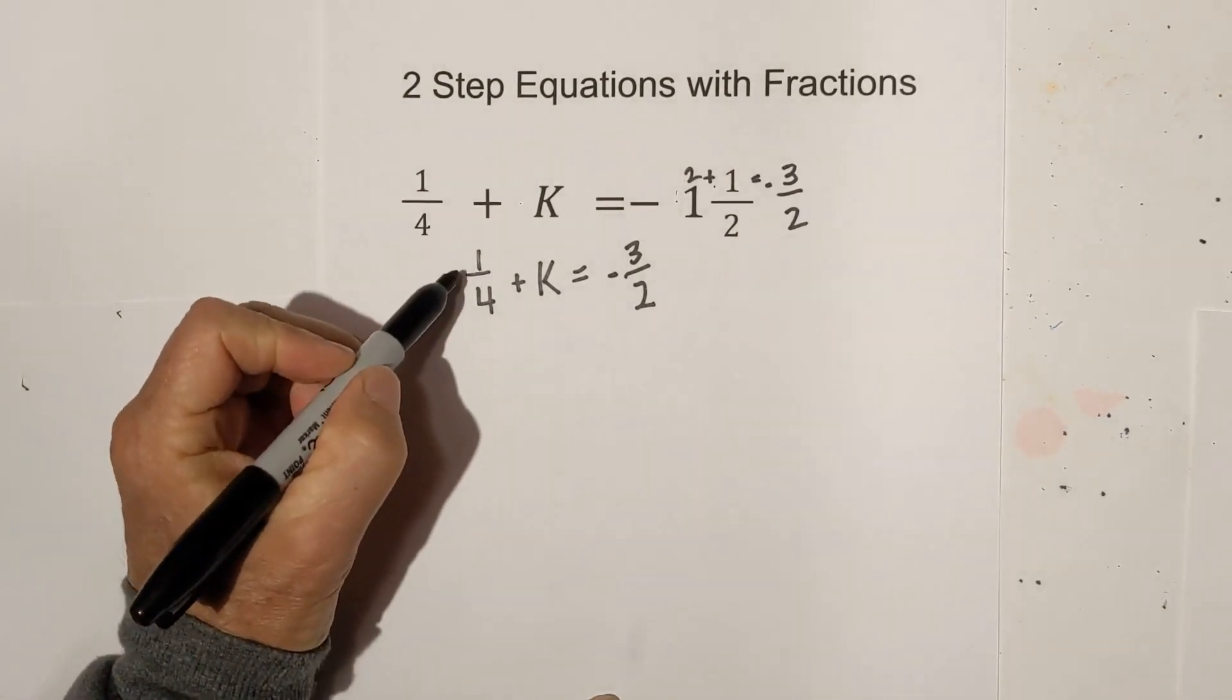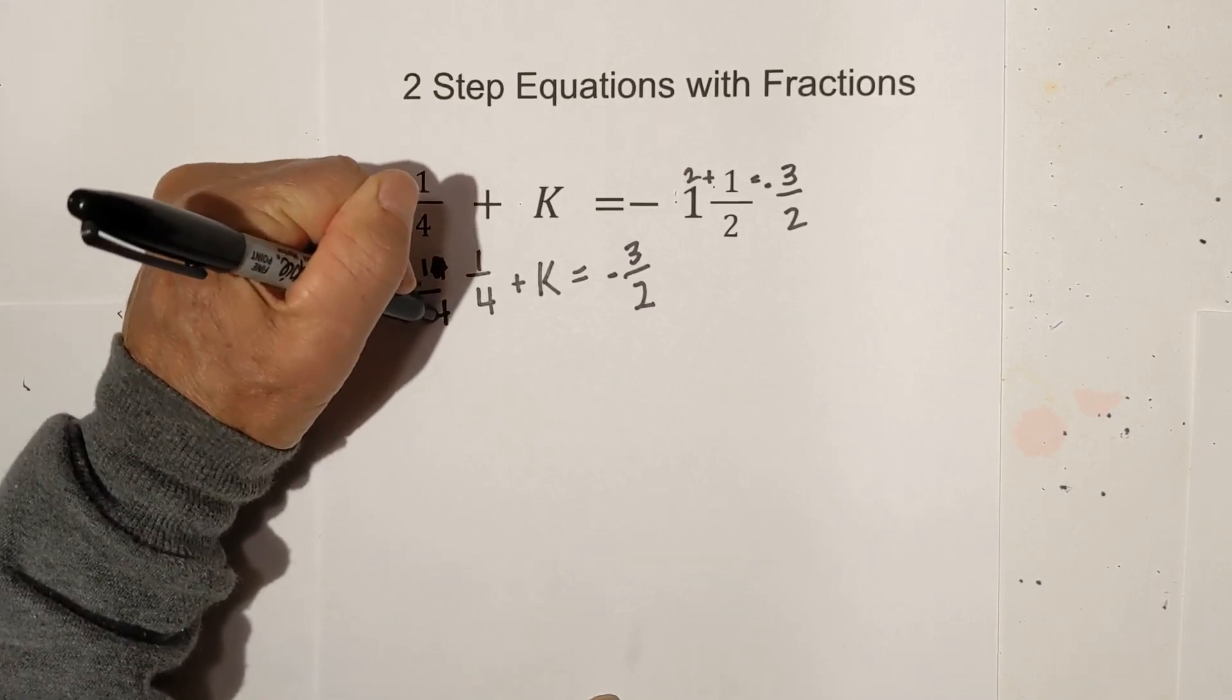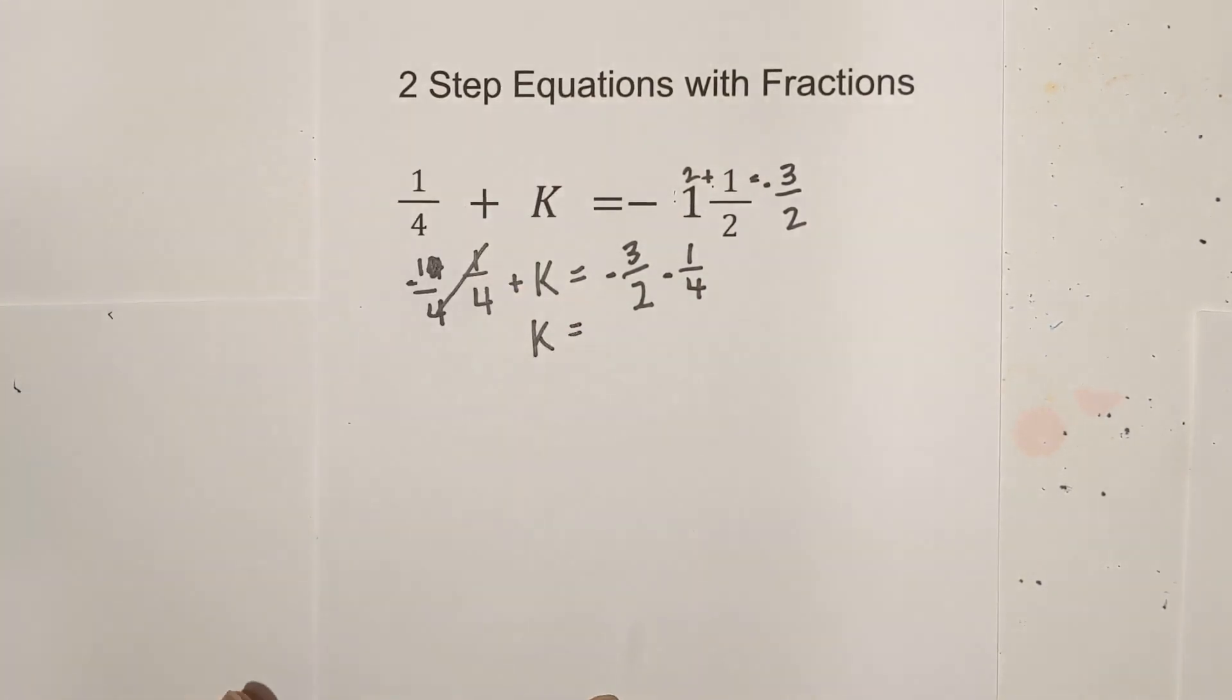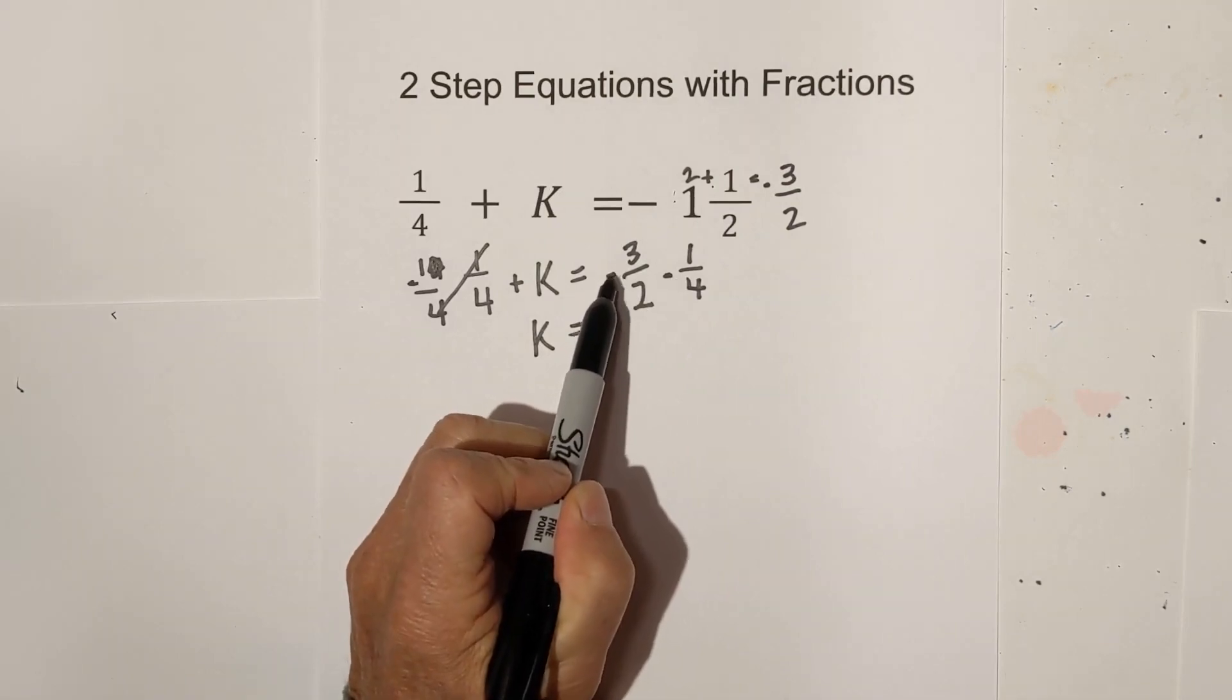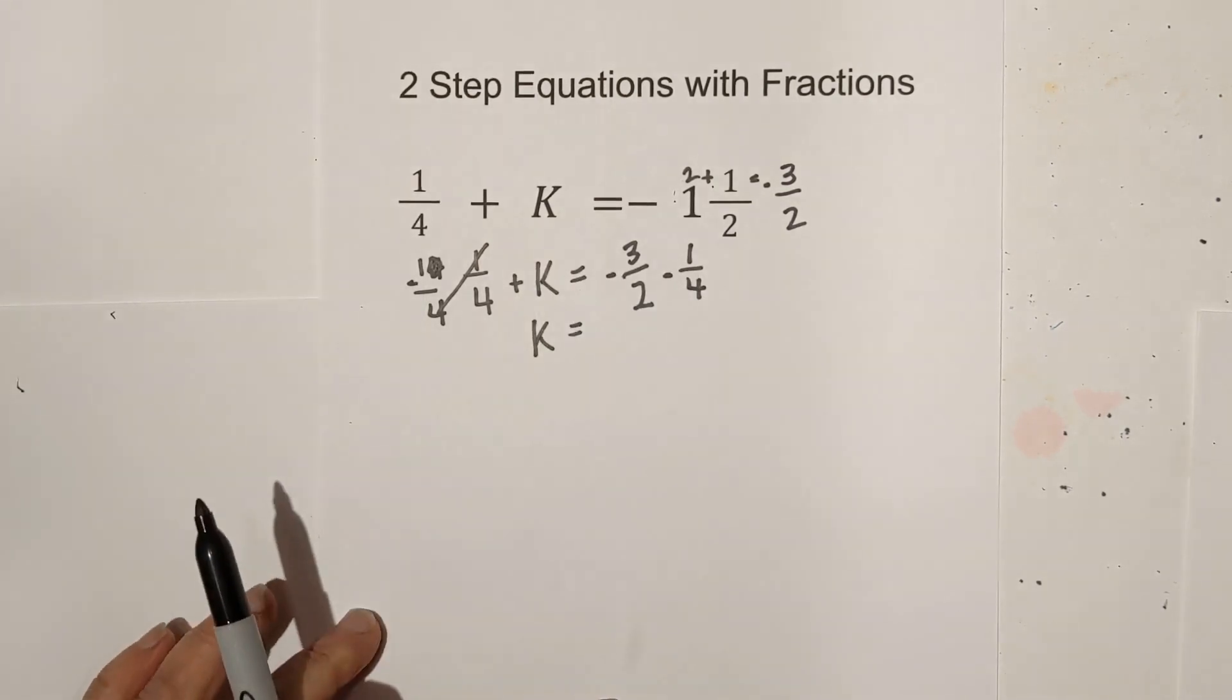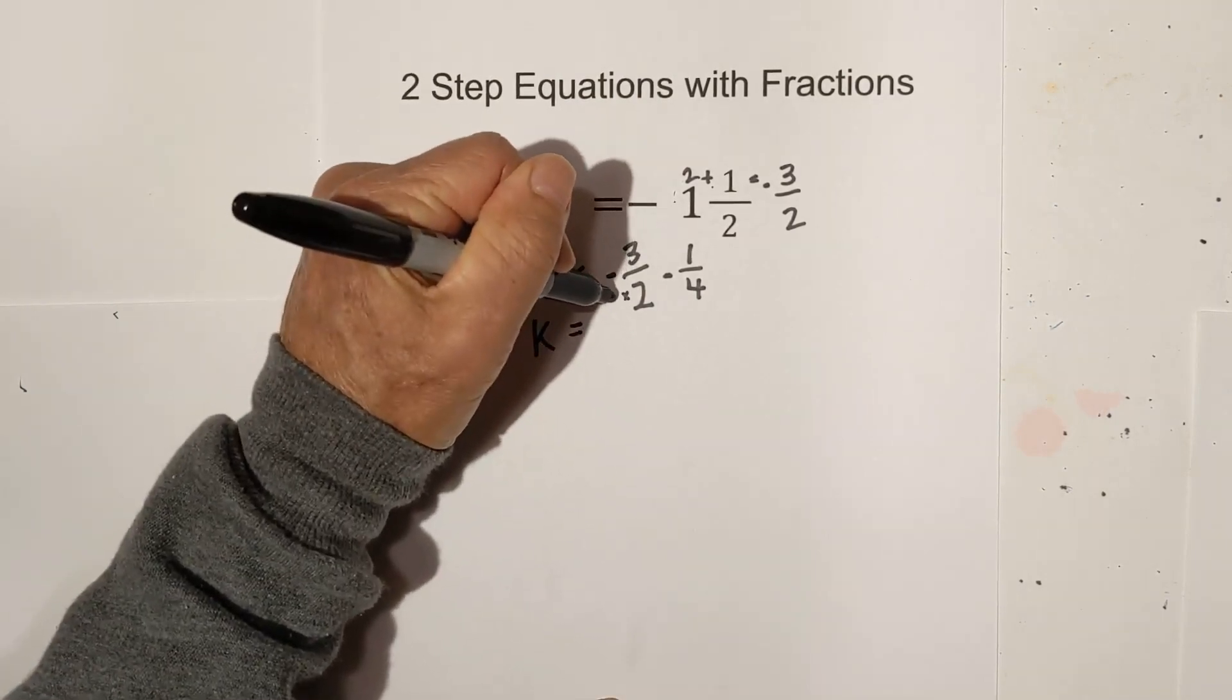Now what we're going to do is subtract 1 fourth from each side in order to eliminate this. So I'll bring down the k. And now we have signs for the rules for a negative minus a negative. And that is basically you just add these and then keep the negative sign. But before we do that, we need to find a common denominator and it is 4.